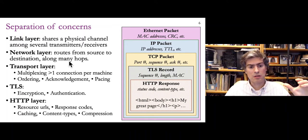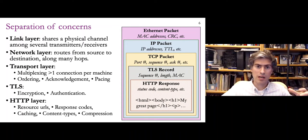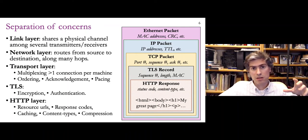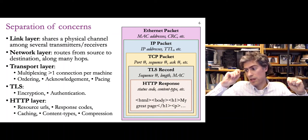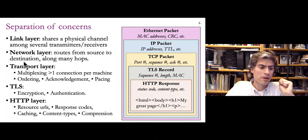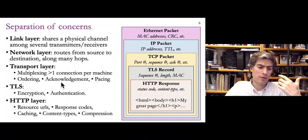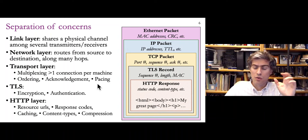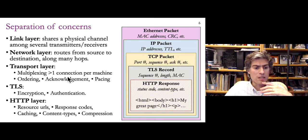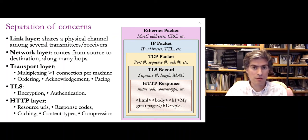Above the link layer, we have the network layer, which deals with getting packets from a source to a destination across many hops — figuring out optimal paths and implementing forwarding. At the transport layer, with TCP in particular, we dealt with packets arriving out of order, packets being dropped and requiring acknowledgment and retransmission, controlling the pacing so we don't overwhelm the network or the receiver, and multiplexing — allowing multiple connections on a single machine so different applications can have concurrent connections.